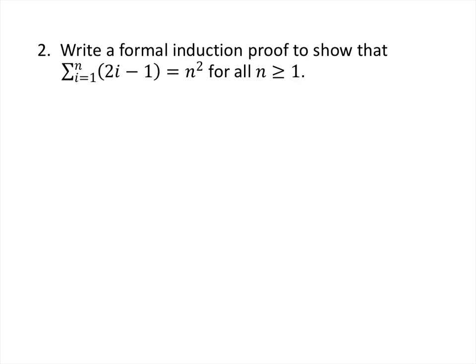Let's do another example. This one involves sums, so you'll see some differences, but also some similarities. Try to focus on the things that are the same. We're going to start by giving a name to the statement: let P of n represent the statement that the sum as i goes from 1 to n of 2i minus 1 is equal to n squared.